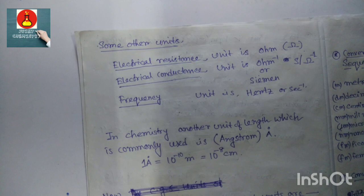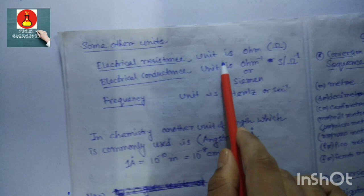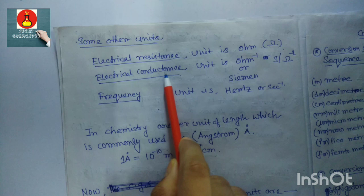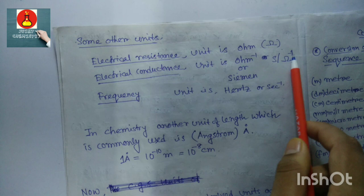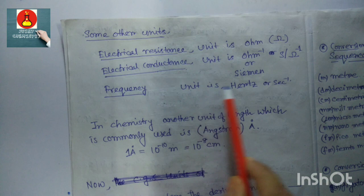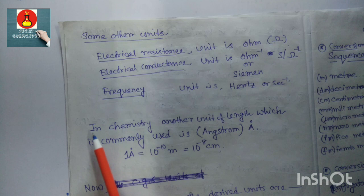There are some other units: electrical resistance has unit ohm, with symbol Ω. Electrical conductance has unit ohm-inverse, with symbol S or Ω⁻¹. Frequency has unit hertz, or second-inverse.